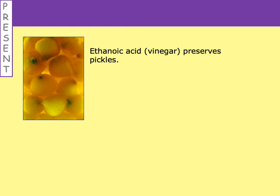Now we're going to look at some uses of acids and how we find them useful. Ethanoic acid, which is vinegar, preserves pickles. If you've got pickled onions or gherkins in a jar, you don't have to keep them in the fridge and they stay fresh for months. The reason is that they are in acid, and bacteria can't grow in such an acidic environment.